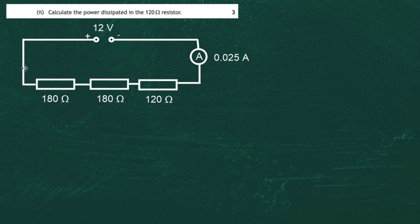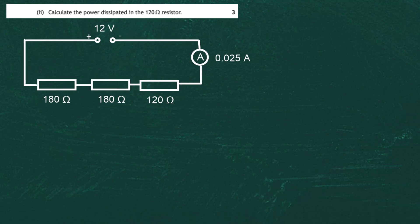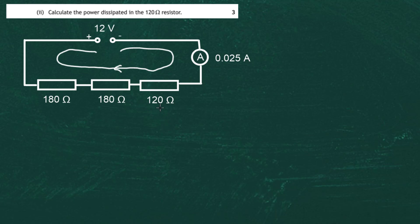So when you see the word dissipate, think of it as wasted. Now let's start on the circuit. There's 12 volts with a current of 0.025 amps going around the circuit, which means it passes through all components because it's a series circuit. When asked to work with a component, the first thing I want to do is collect all the important data about it. For the 120 ohm resistor, in electricity there are three key things: the potential difference across it, the current through it, and the resistance of it.